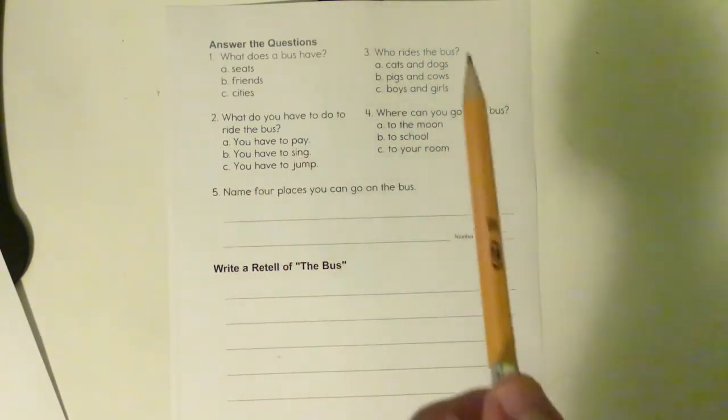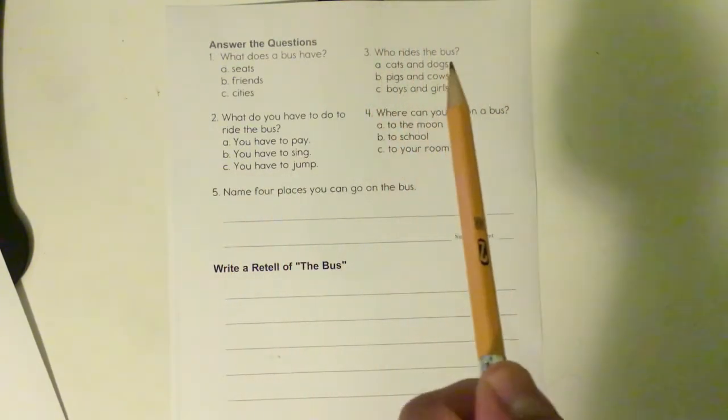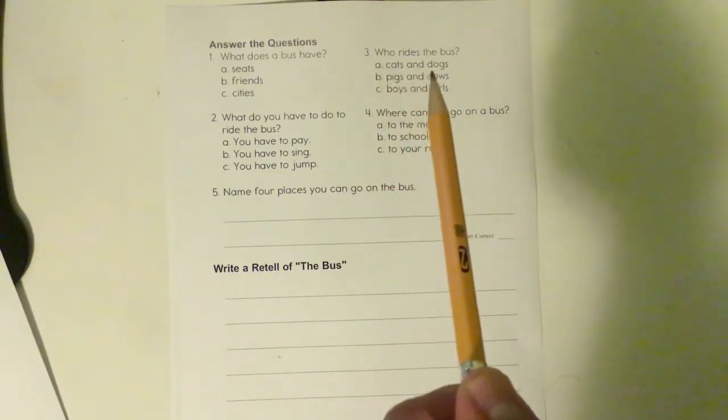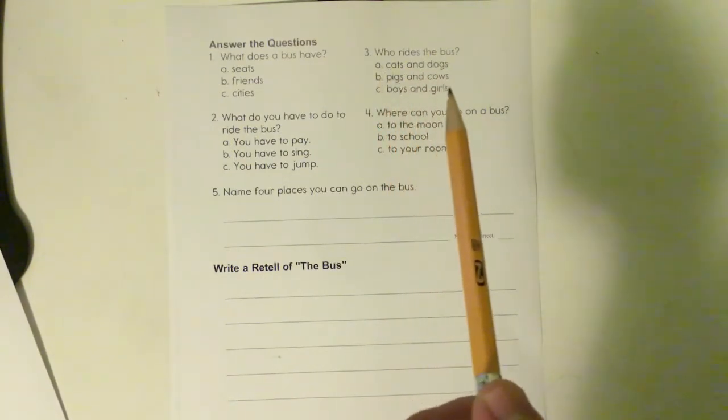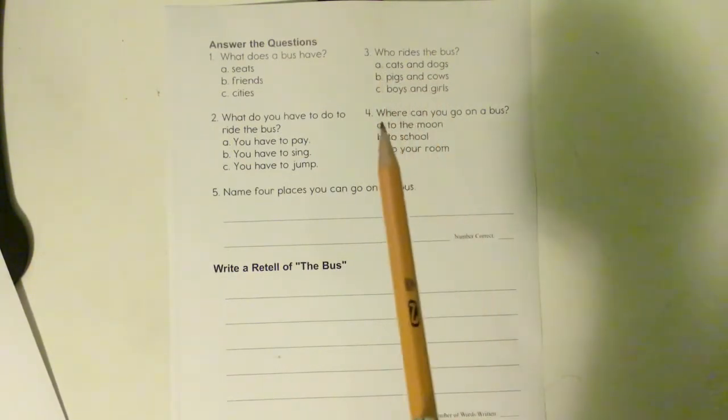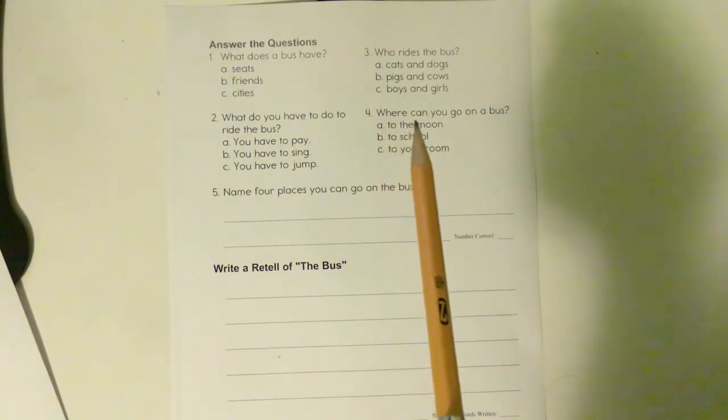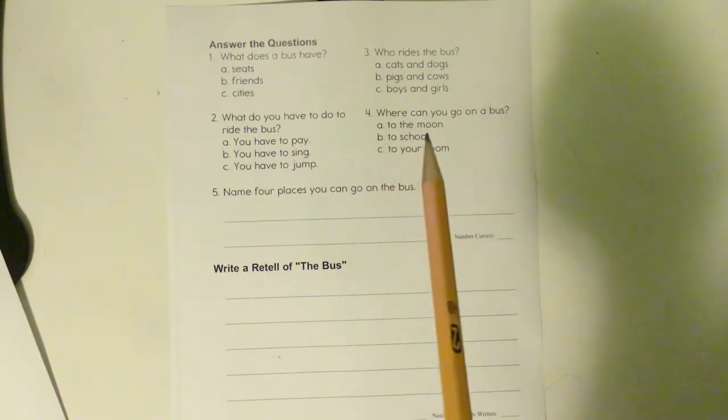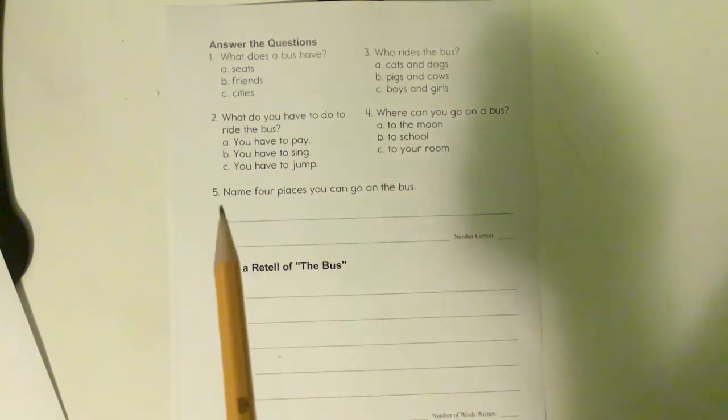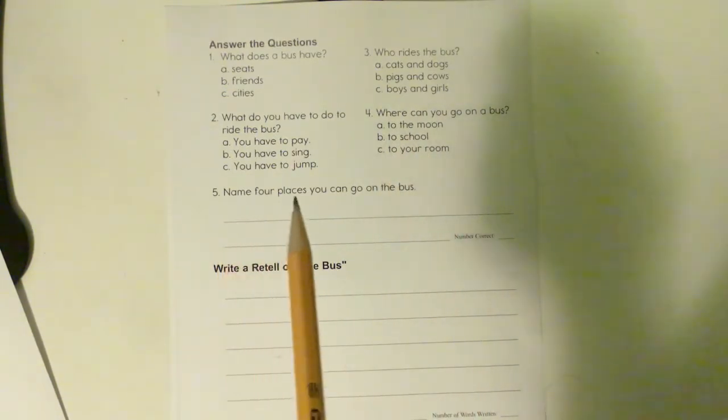Who rides the bus? A - cats and dogs, B - pigs and cows, C - boys and girls. Four, where can you go on a bus? A - to the moon, B - to school, C - to your room. Number five, name four places you can go on the bus.